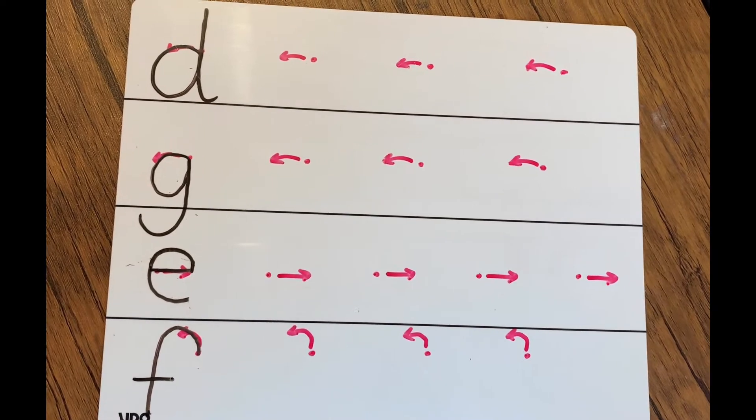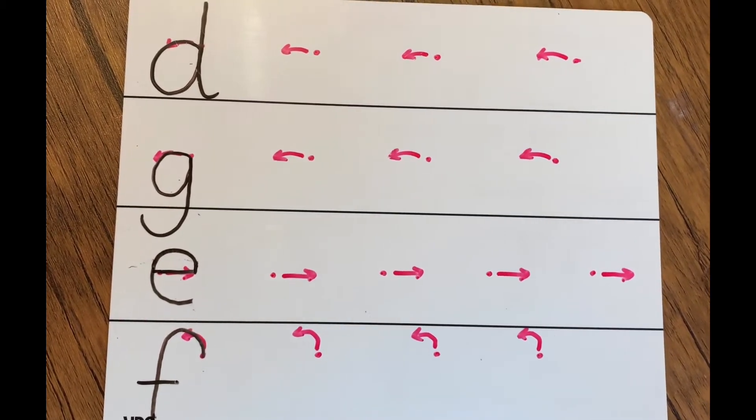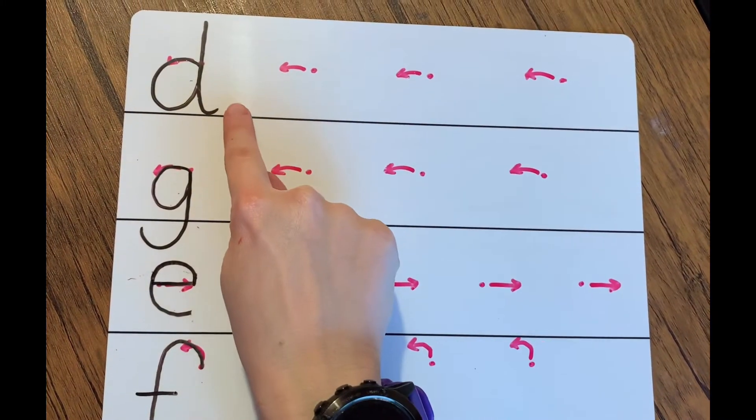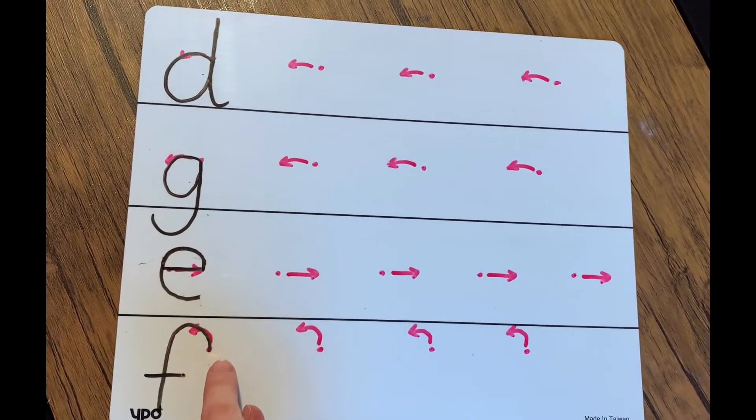Hello boys and girls, welcome to part two of our curly caterpillar letters. Part two is going to look at the letters d, g, e, and f.